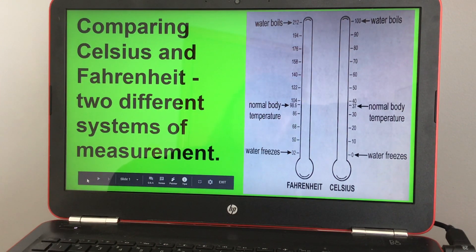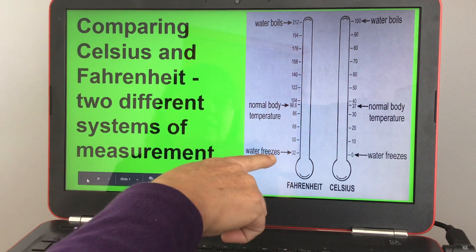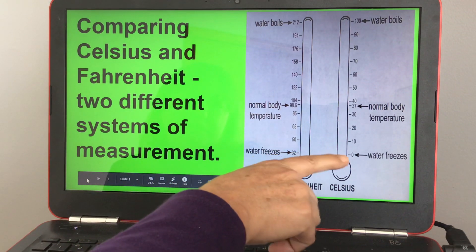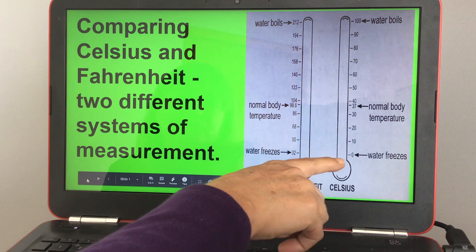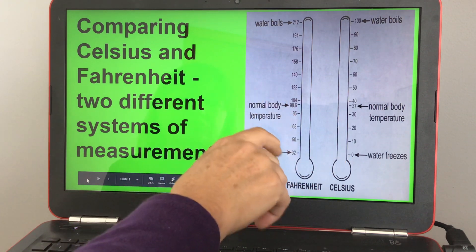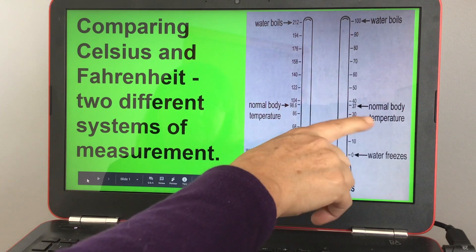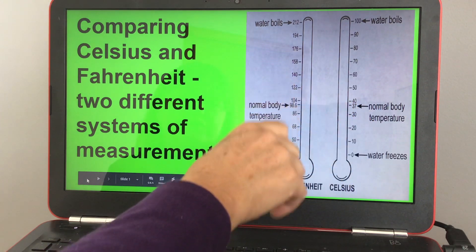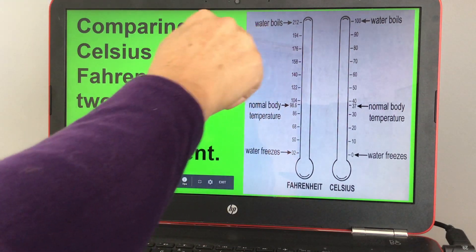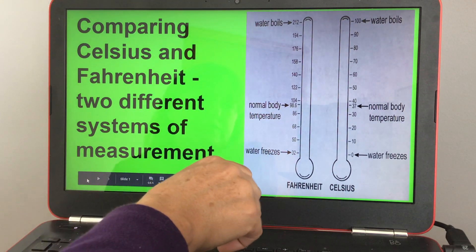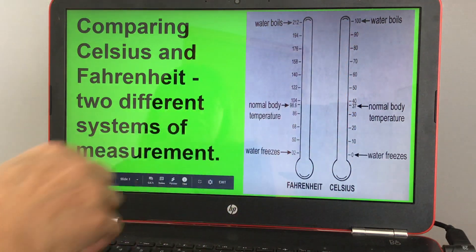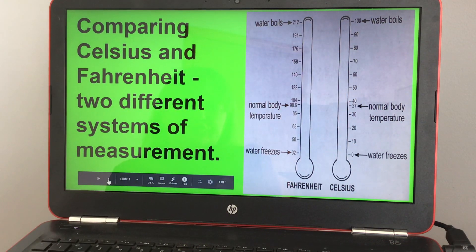Okay, today we will be comparing Celsius and Fahrenheit, two different systems of measurement. If you look on the Fahrenheit scale, water freezes at 32 degrees, but on Celsius water freezes at zero degrees. The normal body temperature for Fahrenheit is 98.6 degrees, but for Celsius it's 37 degrees. And for Fahrenheit, water boils at 212 degrees, but for Celsius water boils at 100 degrees. So they're just two different systems for temperatures.